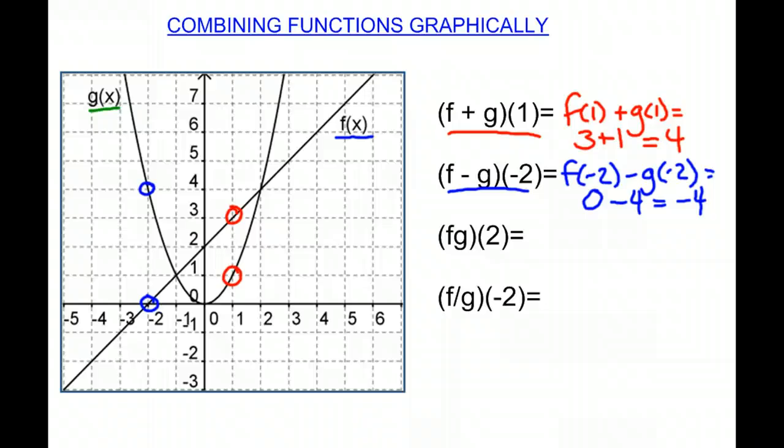Now the next one we have here is f times g of 2. So you have to say f of 2 times g of 2. We want to find when the function is 2. So here, f and g are the same at 2. They're both 4. So we are doing 4 times 4, which is 16. So f times g of 2 will be 16.